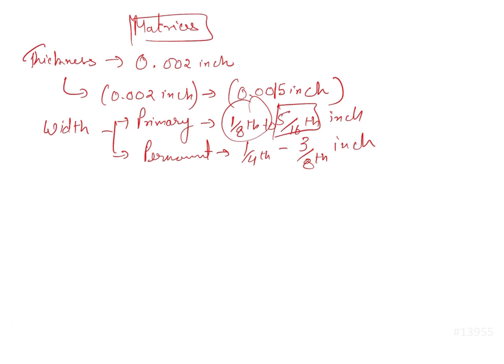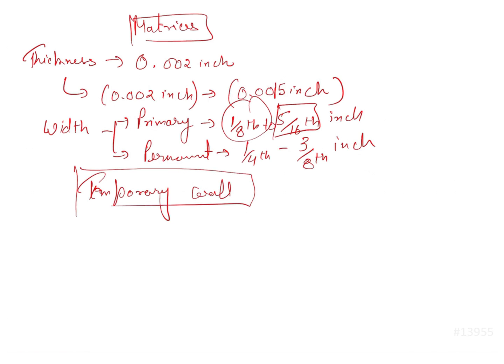The function of the matrix is for creating a temporary wall. It is used to replace the missing wall during introduction of the restorative material. One very important thing is that the matrix should not extend beyond 2 mm in the cervico-occlusal length of the tooth — it should not exceed 2 mm of the cervico-occlusal length.